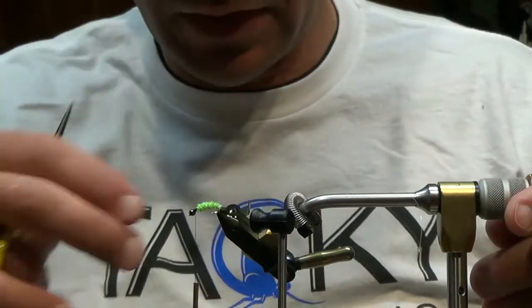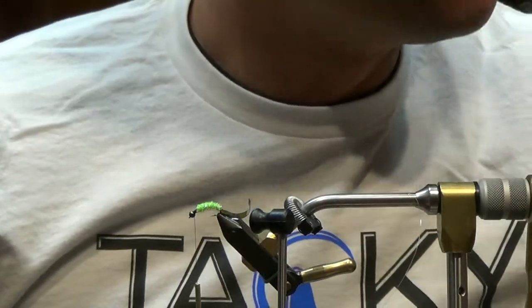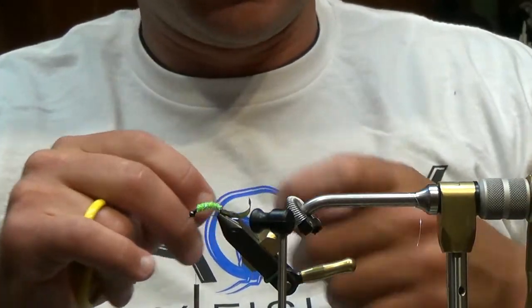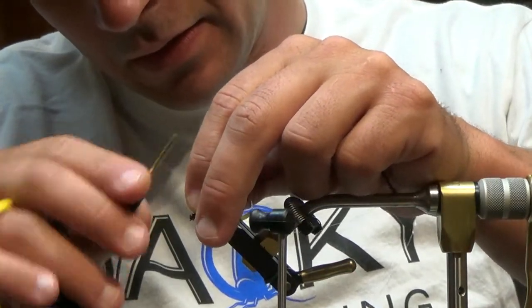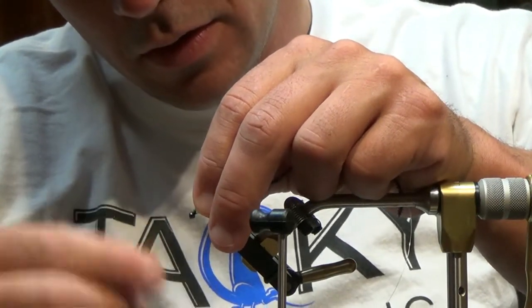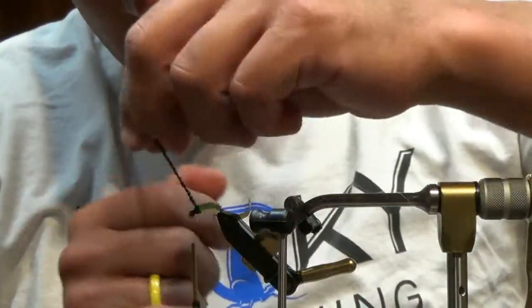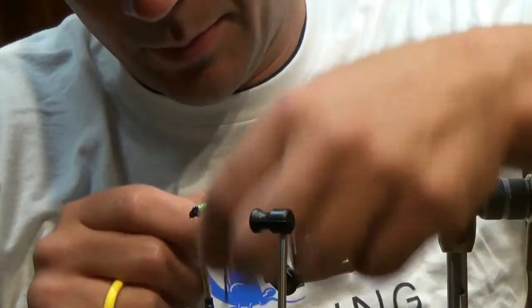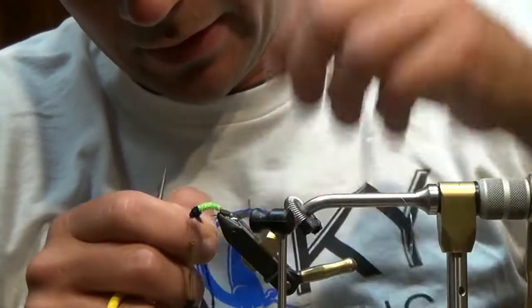Next up we're going to take this cactus chenille in black and we're just going to tie this in and fill up our space that we have right behind the bead. Same thing, nice even wraps, try and keep your taper consistent. Go over it a few times and that looks pretty good right there. We're going to call that good.